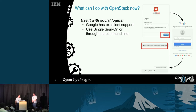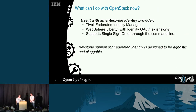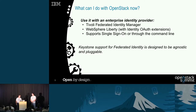What can you do with OpenStack federation now? You can use it for social logins — for example, signing in with your Google credentials if set up correctly — and there's command-line support for this as well. You can also use it with an existing enterprise identity provider, such as Tivoli's Federated Identity Manager, which is an IBM product, or WebSphere Liberty — if you install the correct extensions, it can act as an identity provider that Keystone can interact with. Both support single sign-on and CLI access.